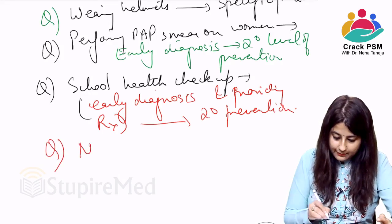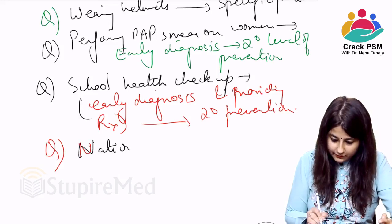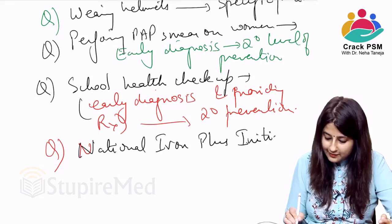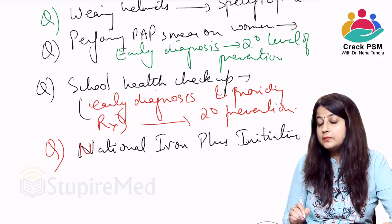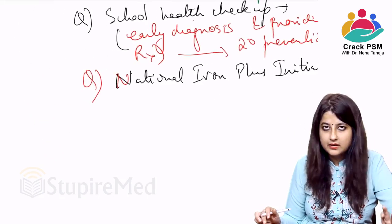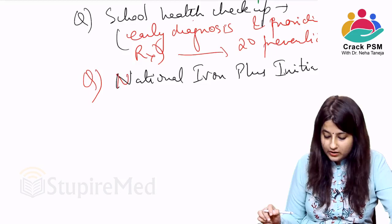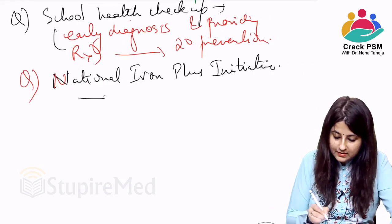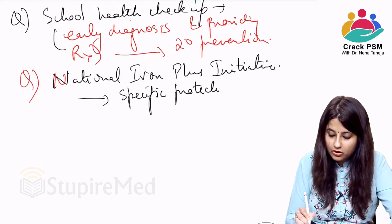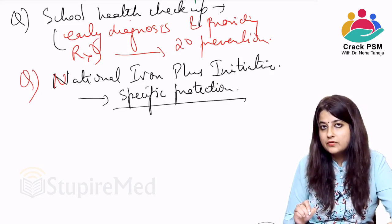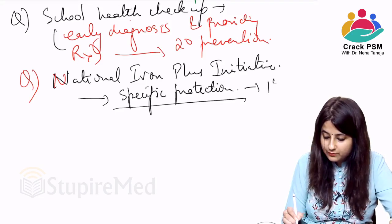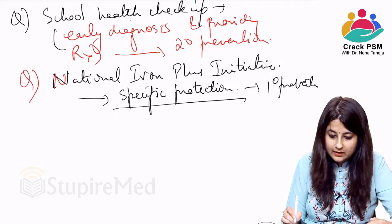National Iron Plus Initiative: we give iron tablets prophylactically to prevent anemia in pregnant mothers, children, and adolescent boys and girls. We are not treating anemia or diagnosing it — we are taking prophylactic measures to prevent it from occurring. This is specific protection, so automatically it is primary prevention.